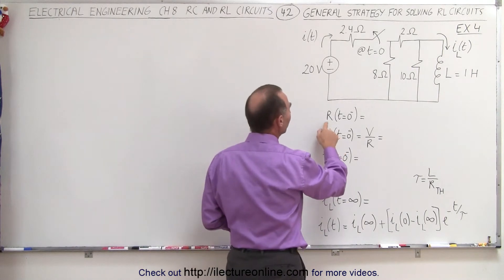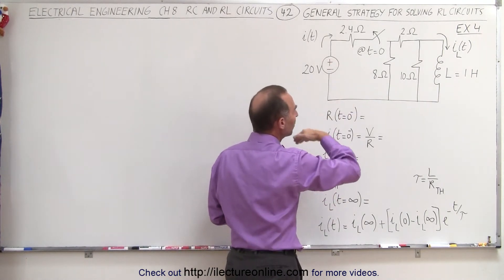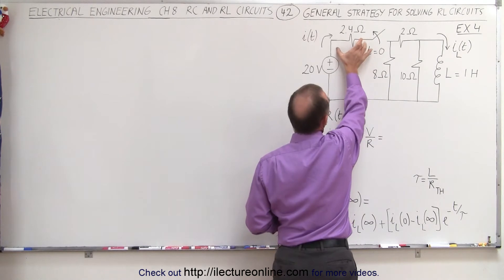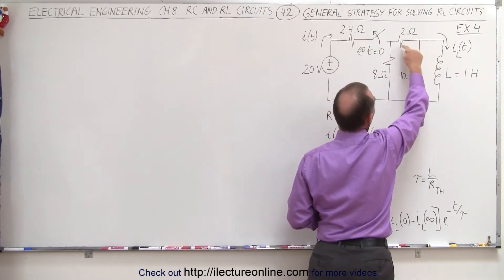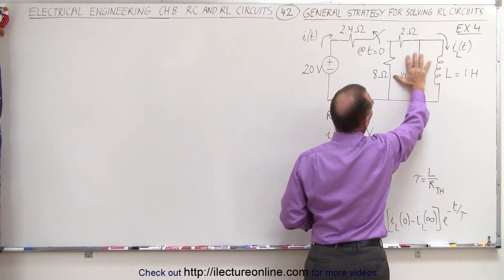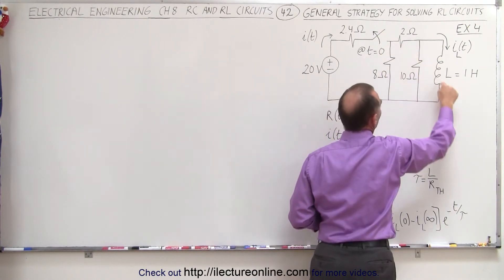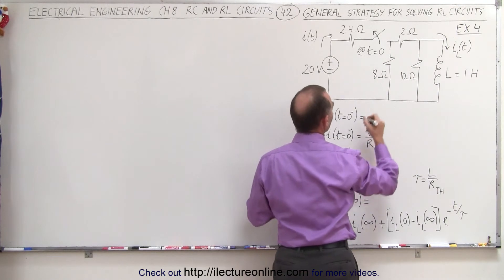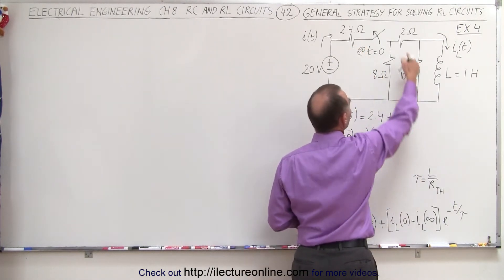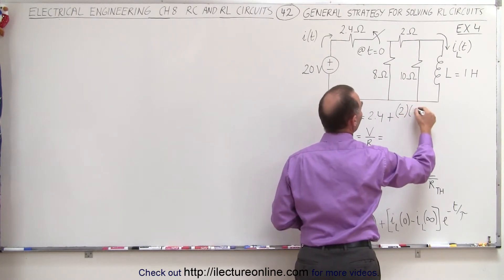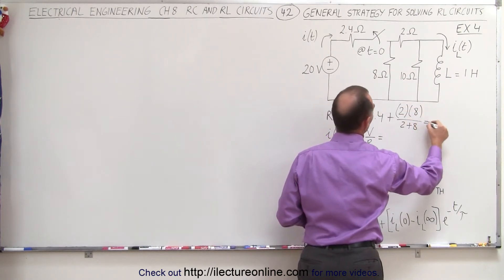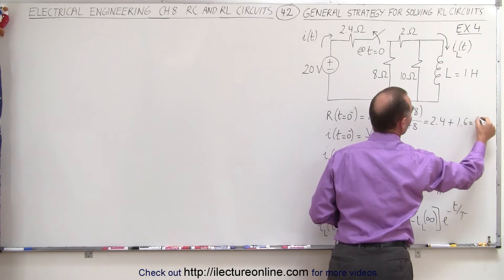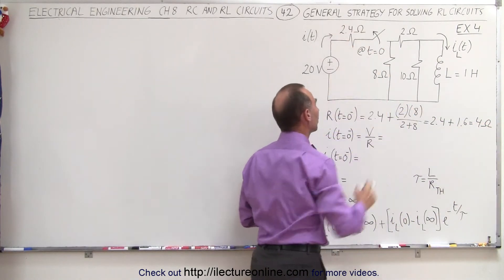Let's find the resistance before the switch opens up so we know the current through the circuit. We have the 2.4 ohm resistor, and then a parallel branch. The 10 ohm resistor doesn't play a role before the switch opens because all current flows through the inductor, so we have a parallel branch between the 2 and 8 ohm resistors. Using the product over the sum: 2.4 plus (2 times 8) over (2 plus 8) = 2.4 plus 16/10 = 2.4 plus 1.6 = 4 ohms total resistance.